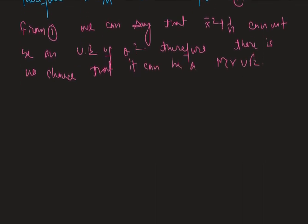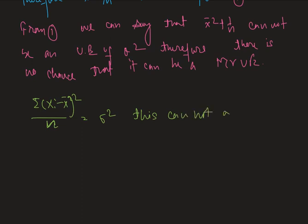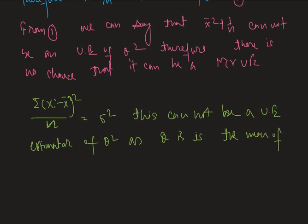Option C is the sum of (xi minus x-bar) squared divided by n. This estimates sigma squared. However, this cannot be an unbiased estimator of theta squared, as theta is the mean of the normal distribution, not the variance. The variance here is 1, so there is no need to estimate it.